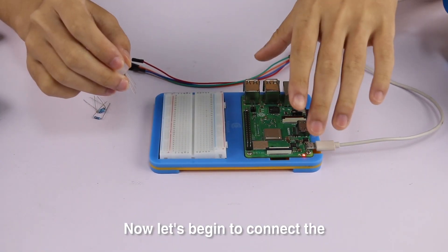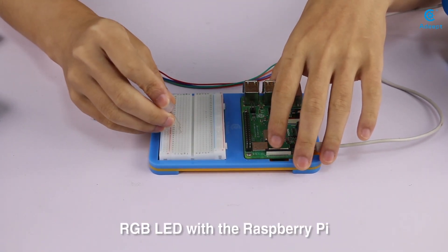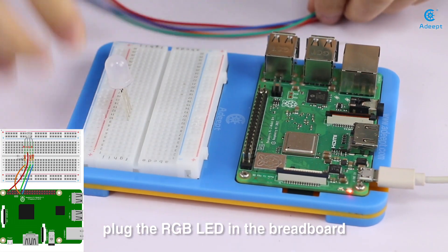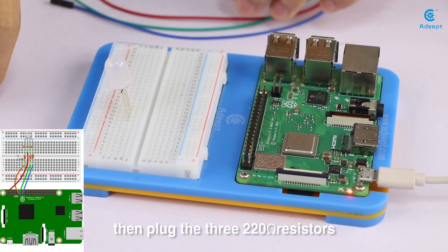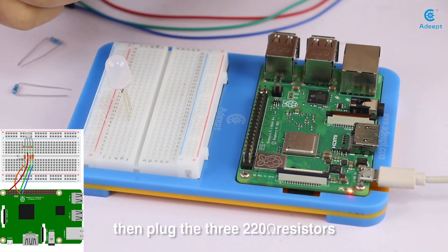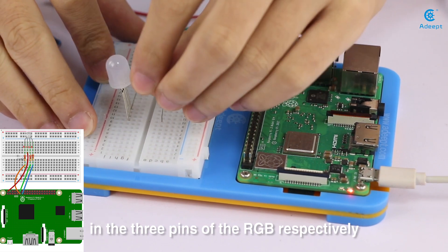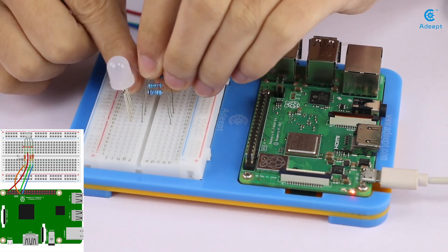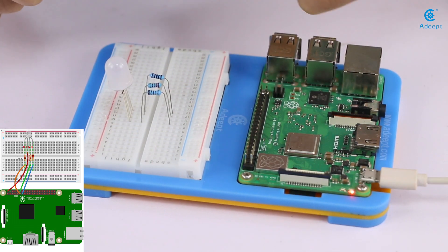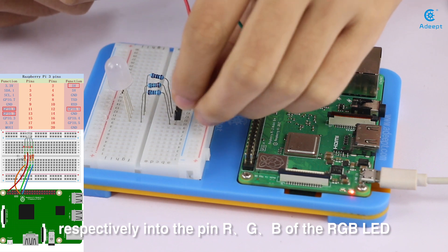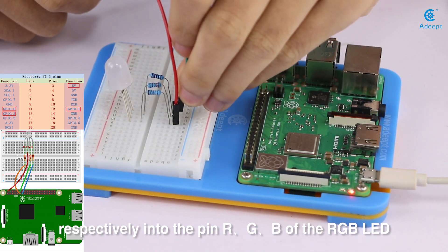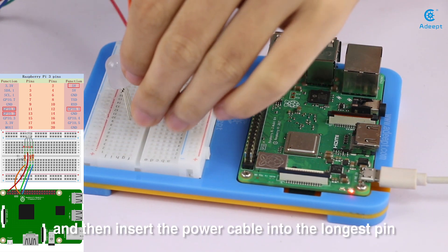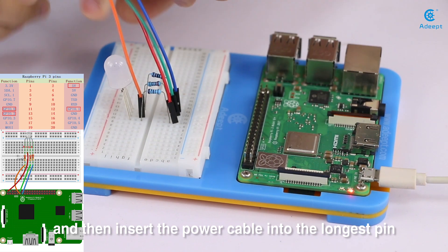Now let's begin to connect RGB LED with Raspberry Pi. Plug the RGB LED in the breadboard. Then plug the 3 220 ohm resistances in the 3 pins of the Raspberry Pi respectively. Plug these jumper wires respectively into the pins RGB of the RGB LED. And then insert the power cable into the longest pin.